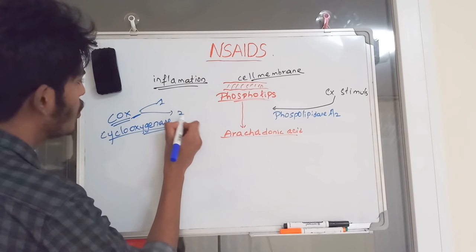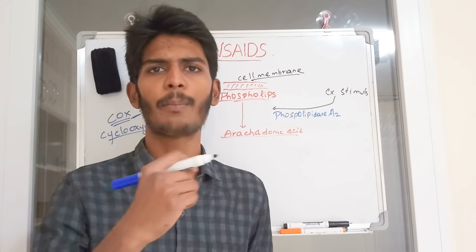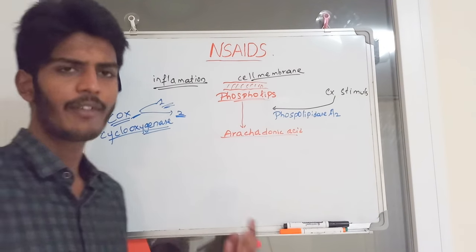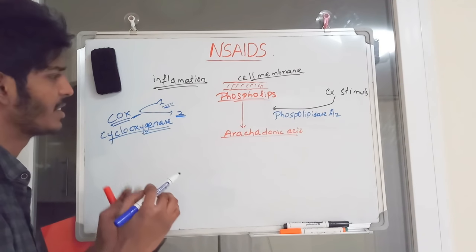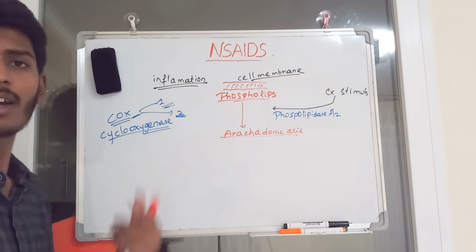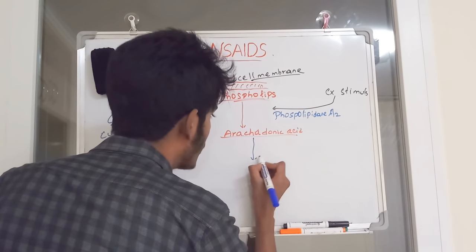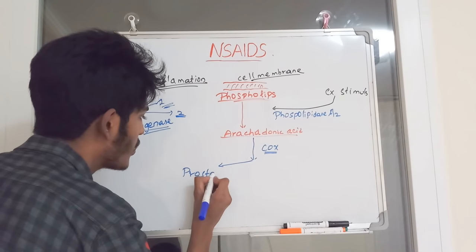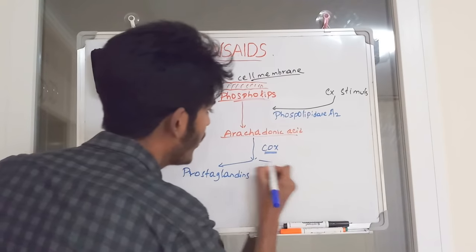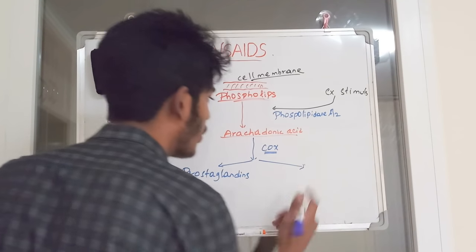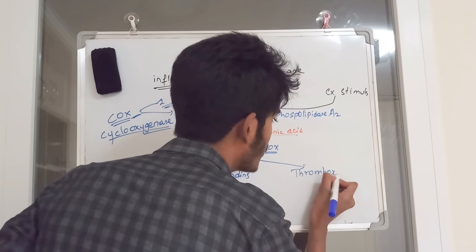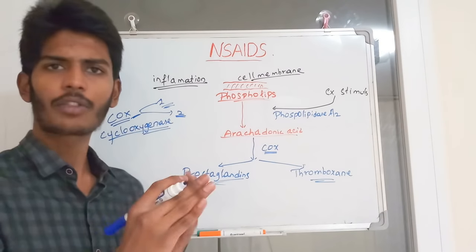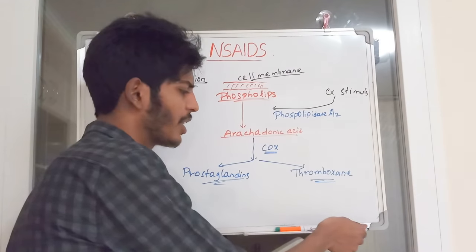COX-2 is produced only when there is an inflammatory response, though it can be present in small amounts in parts of the brain and kidney under physiological conditions. NSAIDs act on the COX enzyme. When COX acts on arachidonic acid, it forms prostaglandins and another compound called thromboxane.